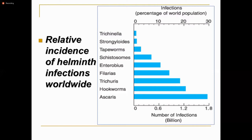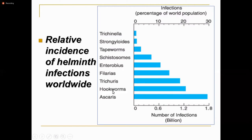In Pakistan, the highest incidence is caused by Ascaris lumbricoides, just like worldwide. The second most common in Pakistan is the pinworm, Enterobius vermicularis. Worldwide it ranks around fifth, but in Pakistan it is second in terms of highest percentage of worm infestation after Ascaris lumbricoides.